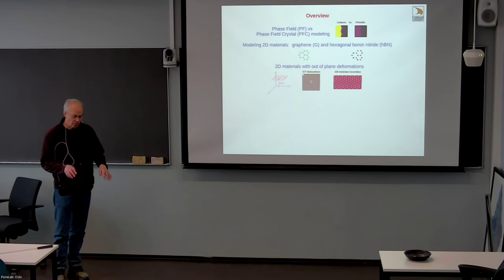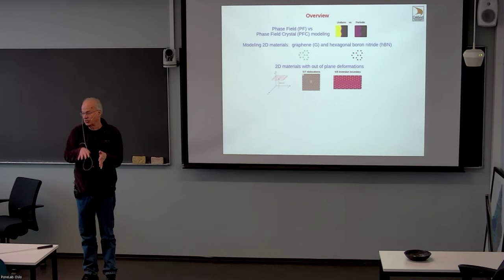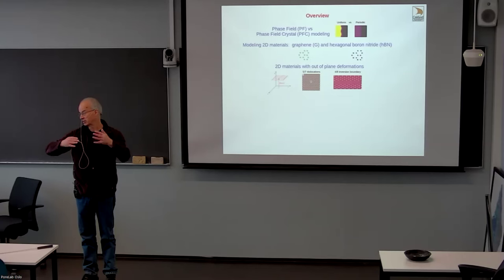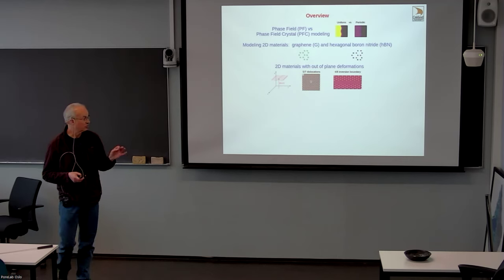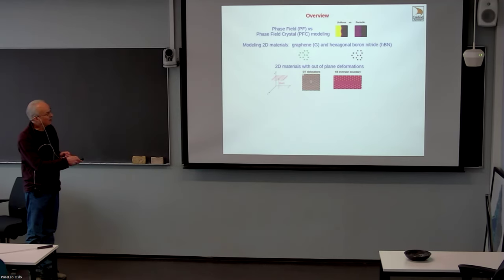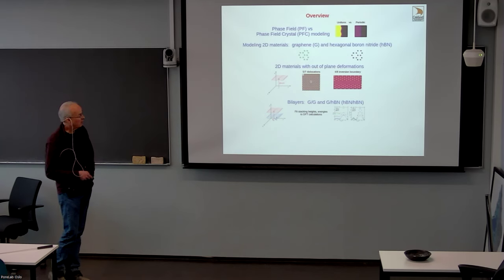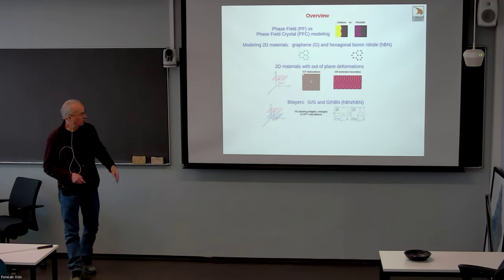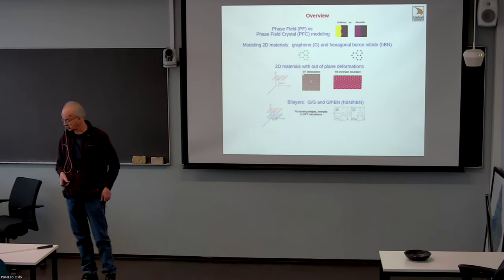These two-dimensional materials models—the original ones we played with—didn't have any out-of-plane deformations. When you have dislocations and stress fields, the sheet can buckle to get rid of some energy. That's important physics, particularly with dislocations in two dimensions. I'd like to talk about that, and then I'll talk about bilayers—for example, when graphene and HBN layers are stacked and rotated, they form moiré patterns and all sorts of interesting structures.